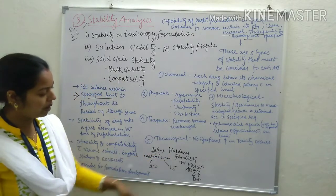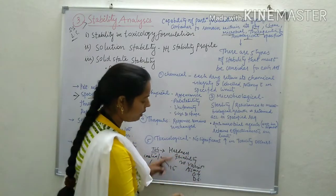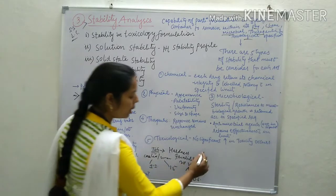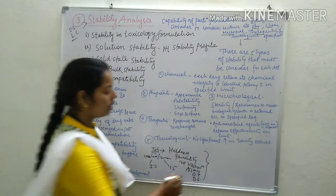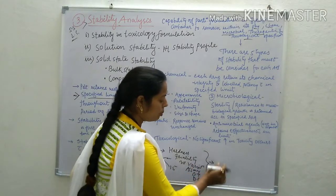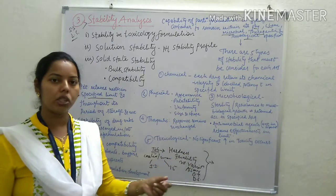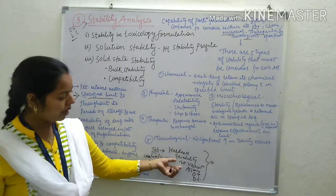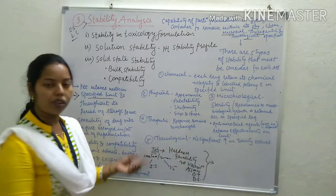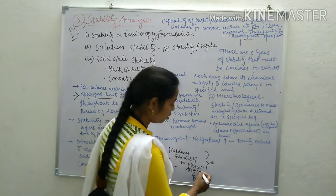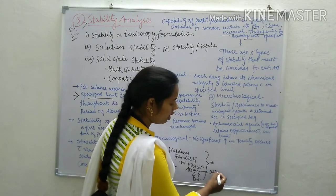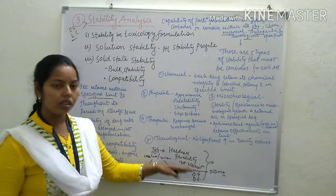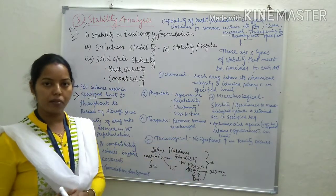The parameters — hardness, fragility, weight variation, assay, disintegration and dissolution — are predetermined. We predetermine these parameters so the results will meet specifications: for example, disintegration time and dissolution in 30 or 40 minutes. If the label claim of the tablet is 500 mg, through assay we can verify the label claim.